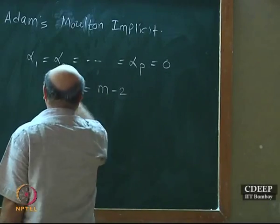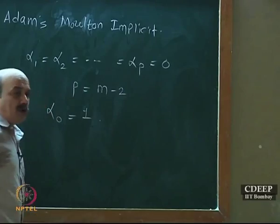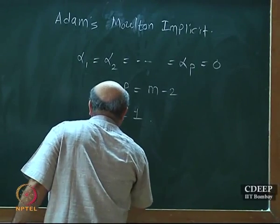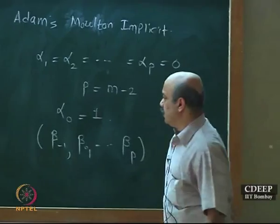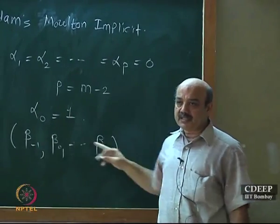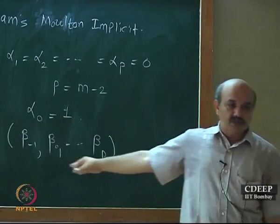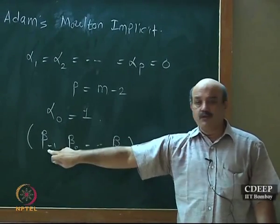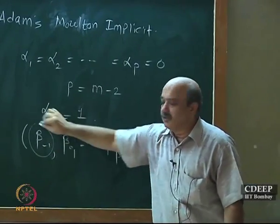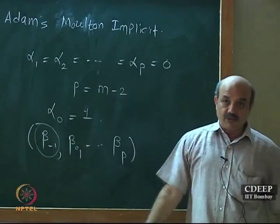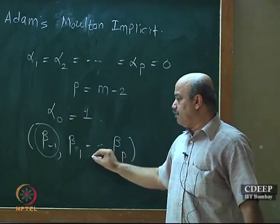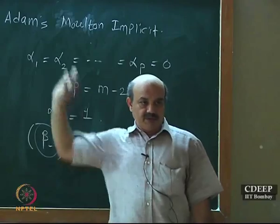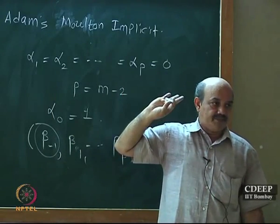For Adams-Moulton, the unknowns are not just beta_0 through beta_p — these are implicit methods, so beta_{-1} is not 0. The first equation gives alpha_0 = 1. You set up the remaining equations for beta_{-1}, beta_0 through beta_p and solve them as a matrix equation. The beta coefficients obtained by this approach are not going to be identical to Adams-Bashforth — these are two different approaches yielding two different sets of coefficients.